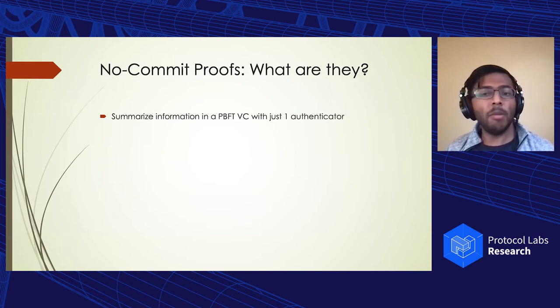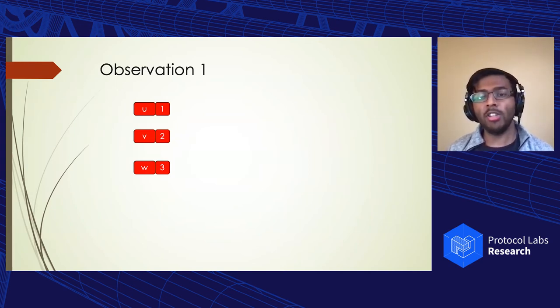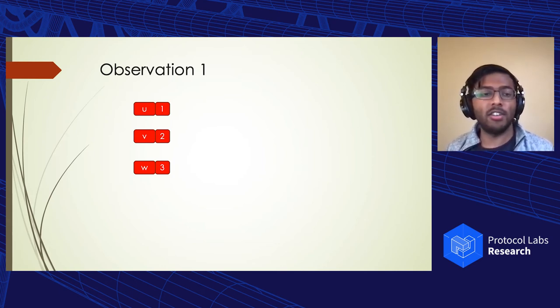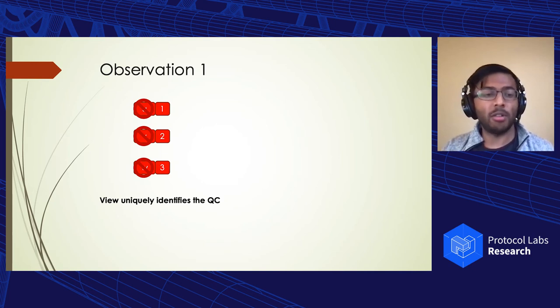So now I'm going to show this no-commit proof construct, which is able to summarize the information from a PBFT style view change, just using one authenticator. This information allows a replica to know whether the leader was being malicious when sending its proposal. They're called no-commit proofs because it's a proof that a replica's QC could not have been committed. To do this, we're going to rely on two main observations. Our first observation here is that because the prepare phase guards against equivocation, we actually really don't care about a particular value of a QC. In this case, U or V or W. Since there can be at most one QC that forms in a given view, the view number itself uniquely identifies the QC. For instance, there can't be QCs for both U and U prime to form in view one. So now we can just focus on the view of the QC rather than the particular value.